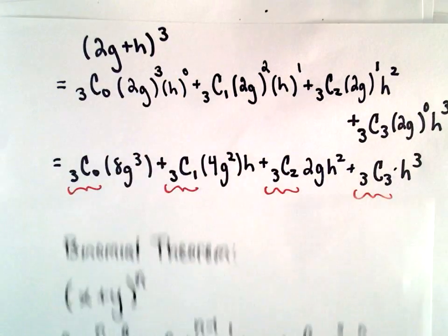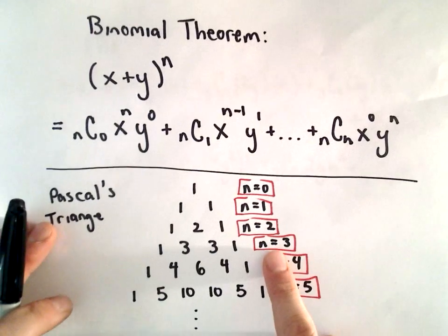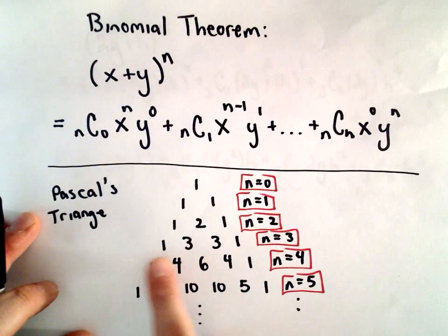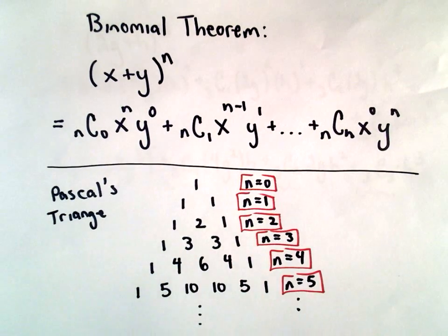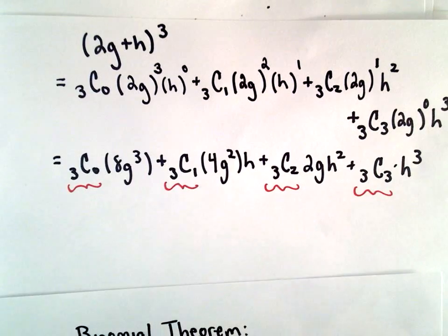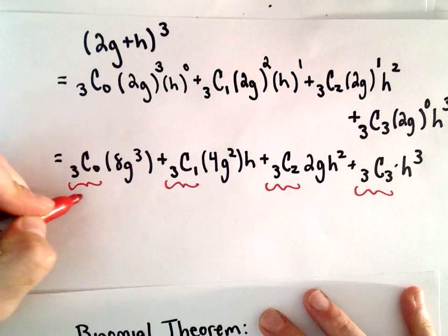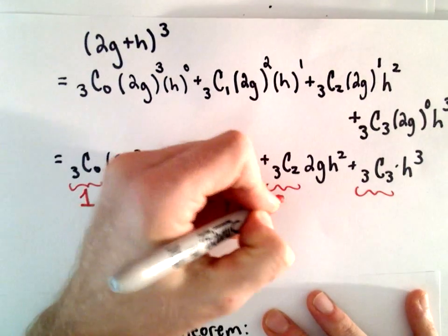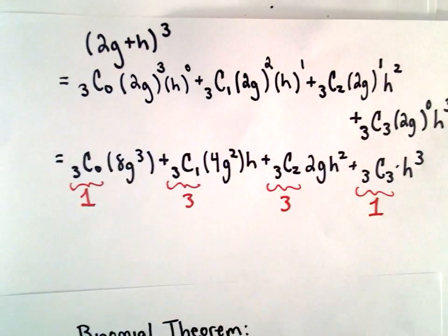So in this case, we said that n was equal to 3. So I look at the third row, and the numbers I see are 1, 3, 3, and 1. So 1, 3, 3, 1. Those are going to be the values of our coefficients. We'll get 1, 3, 3, and 1.